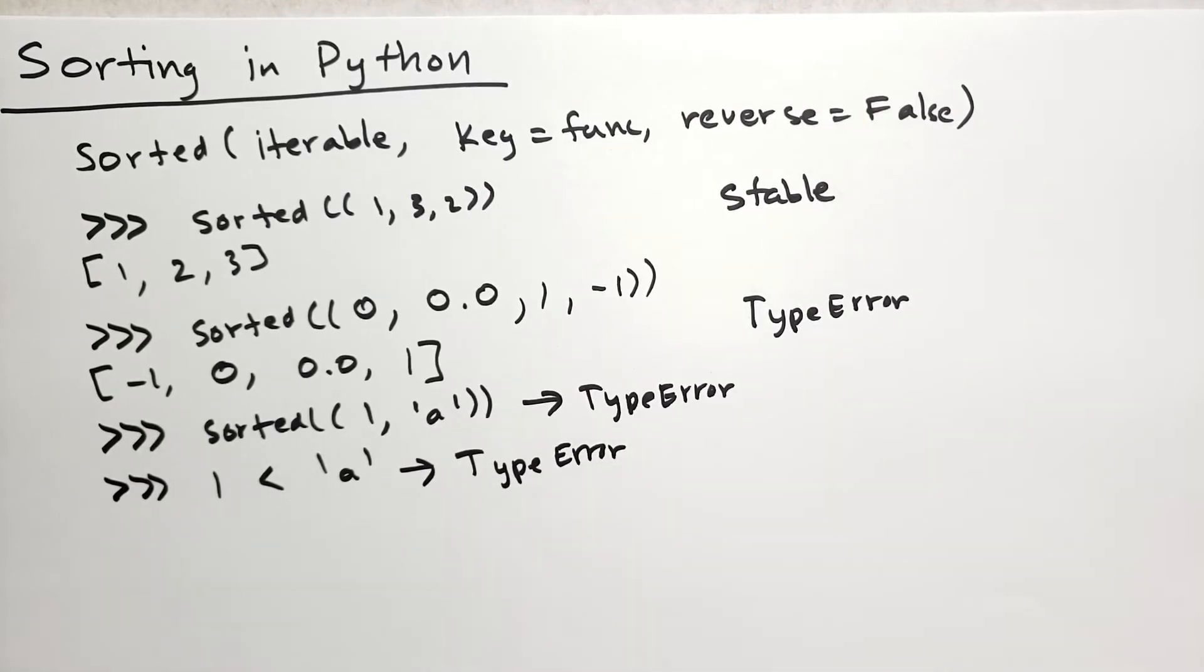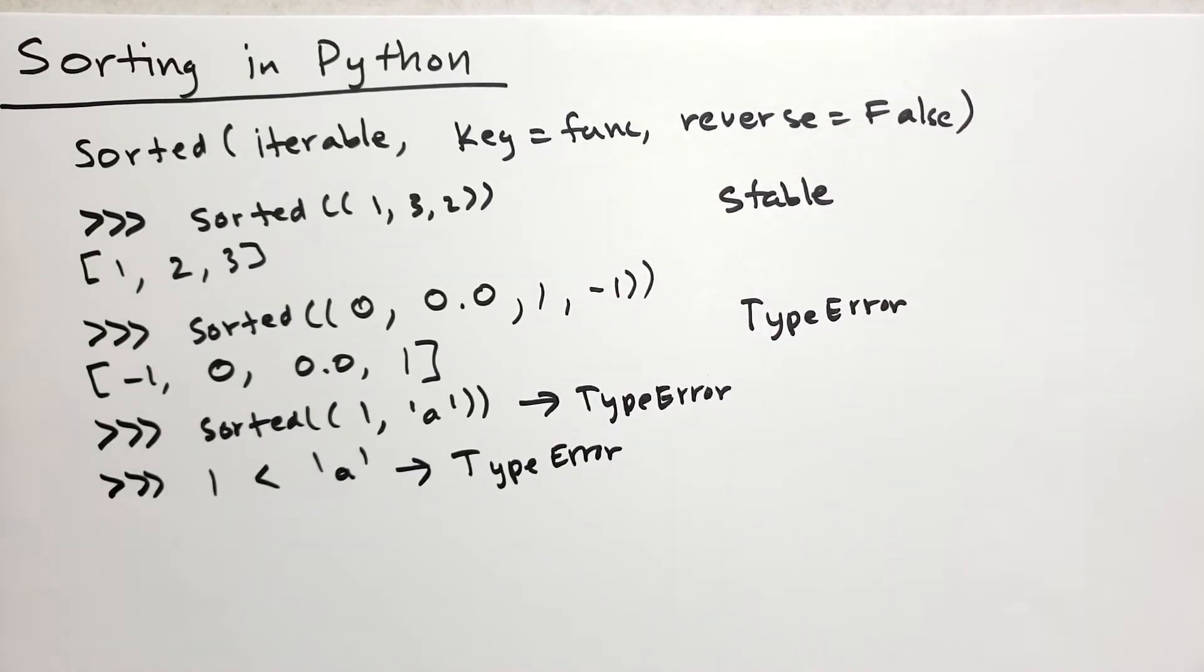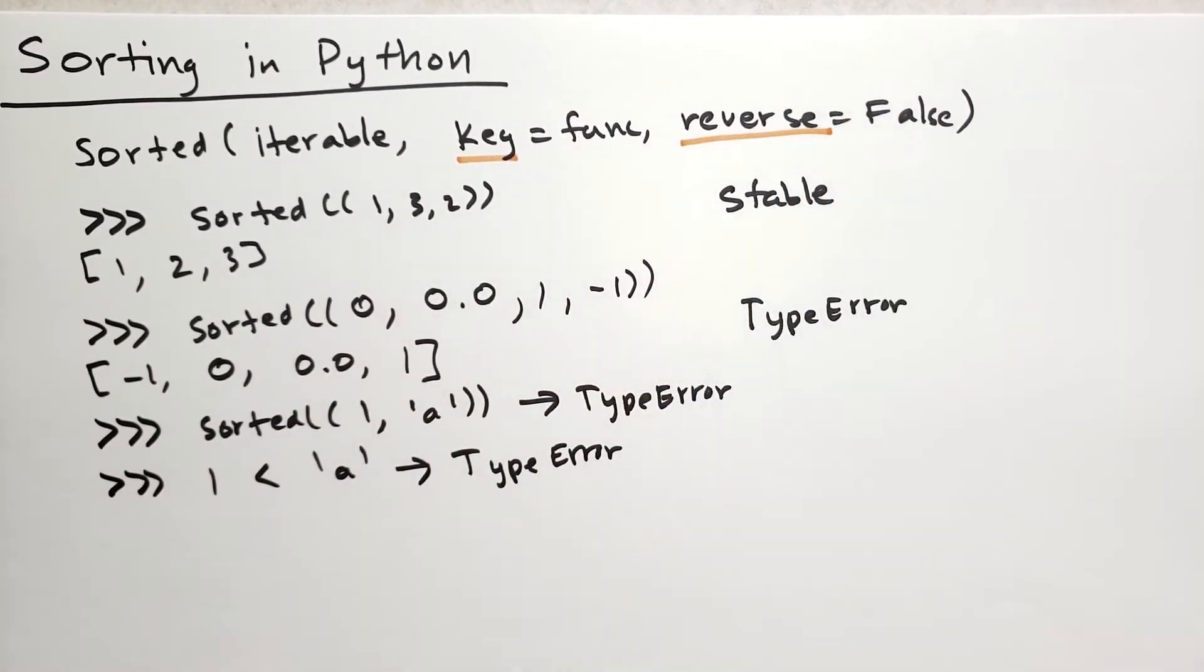When you're sorting an iterable, those items have to be of a similar enough type. You can compare ints and floats. You obviously can't sort complex numbers because they don't have any kind of ordering.